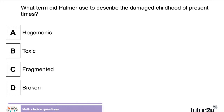What term did Palmer use to describe the damaged childhood of present times? Was it hegemonic childhood, toxic childhood, fragmented childhood, or broken childhood? The answer is B, toxic childhood. She was talking about people spending a lot of time on screens and the lack of adult interaction, referring to it as being a problem.